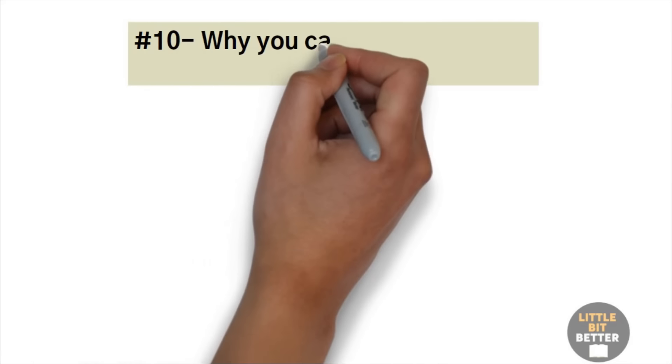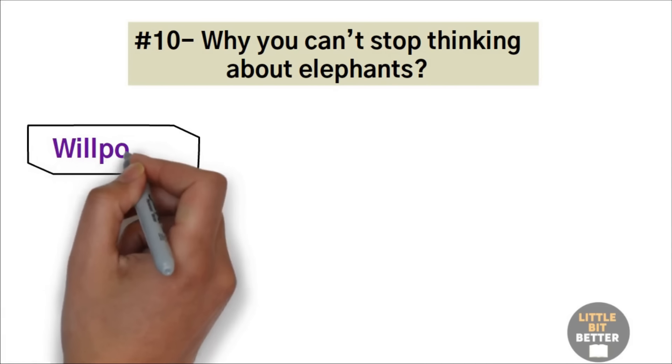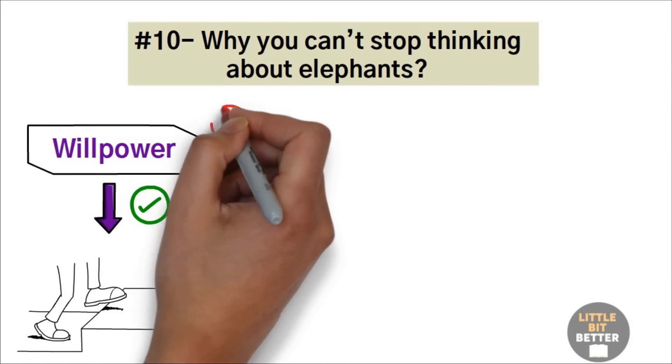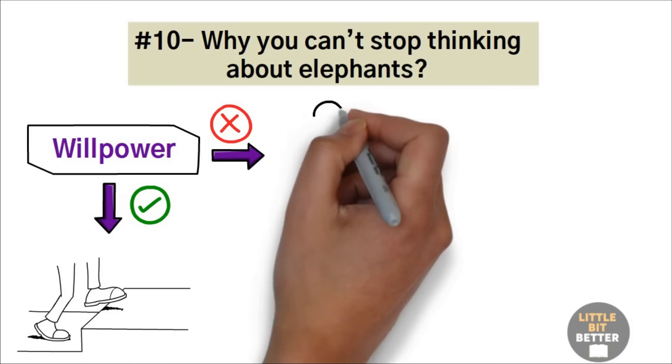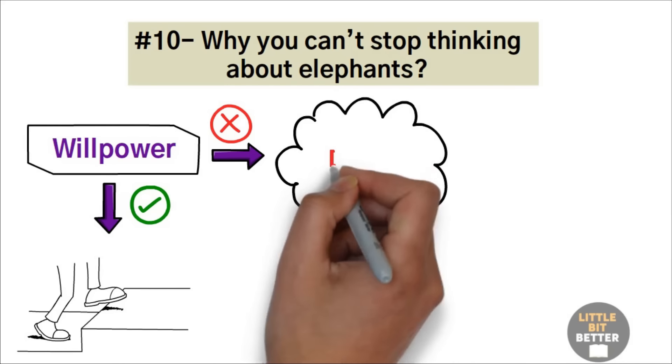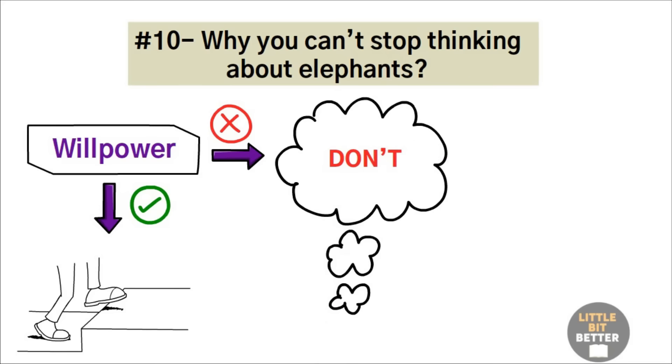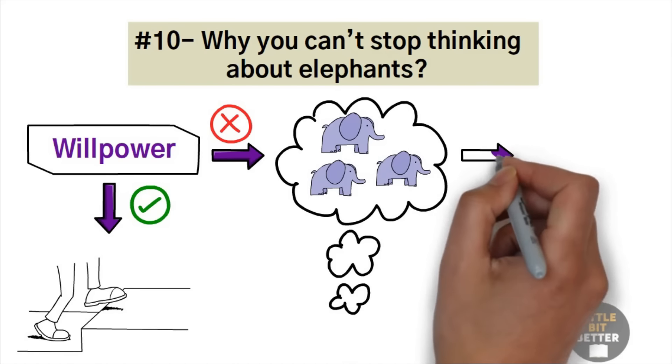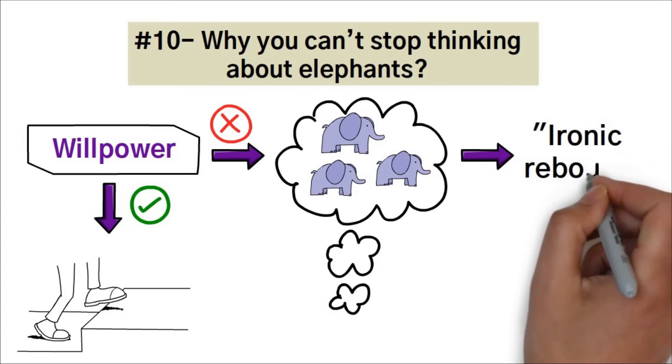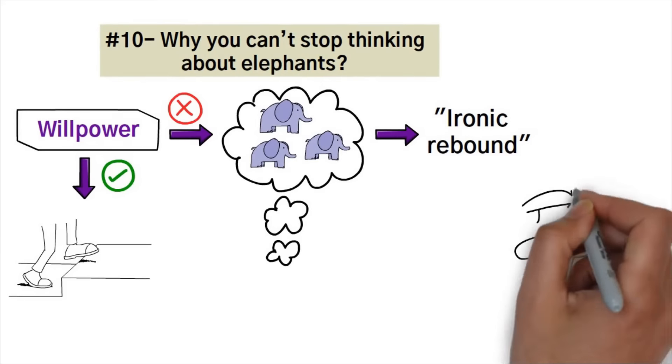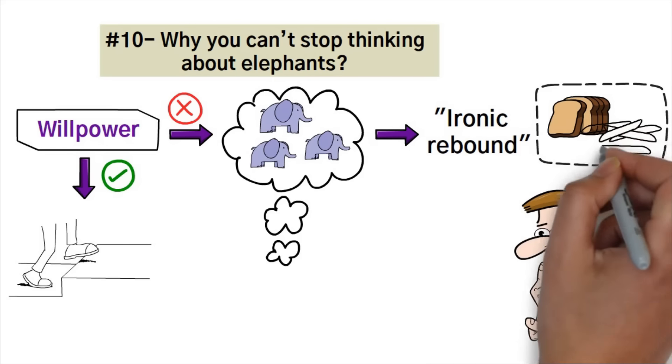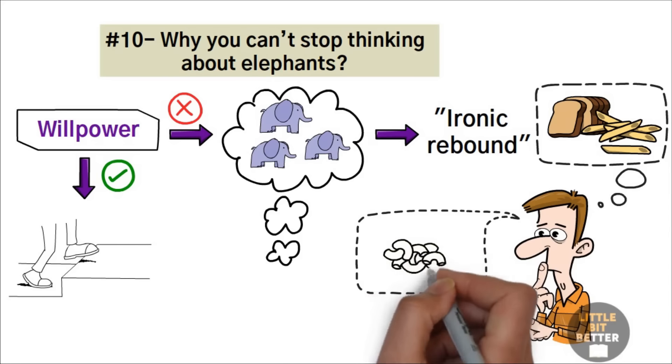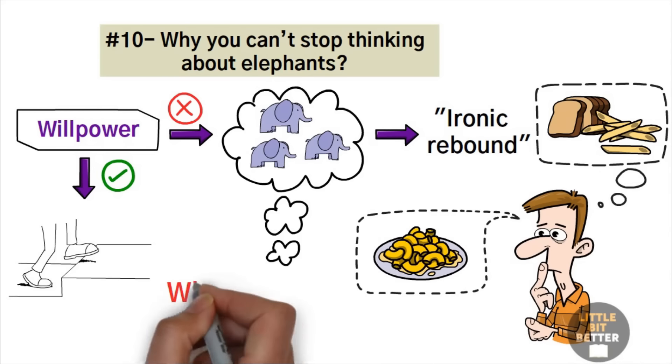Number 10. Why you can't stop thinking about elephants. Willpower does a good job of controlling our outer actions, but it is useless when applied to our inner world of thoughts and feelings. For example, in the following minutes, don't think about elephants. As soon as you set your mind on this task, all you can think about is elephants. This is the result of what psychologists call ironic rebound. This is the reason why you can't stop thinking about bread or pasta as soon as you cut out carbohydrates from your diet. The harder you try to push away a thought, the more likely it will come back even stronger. So what's the solution then?